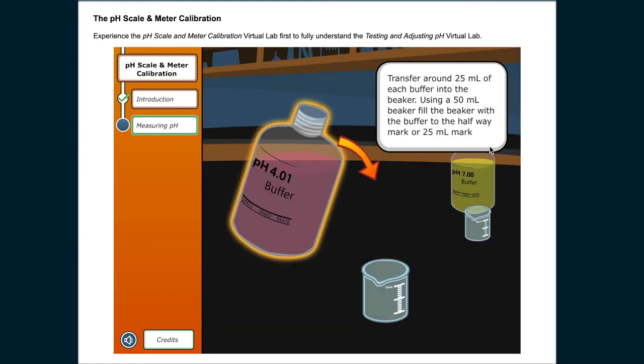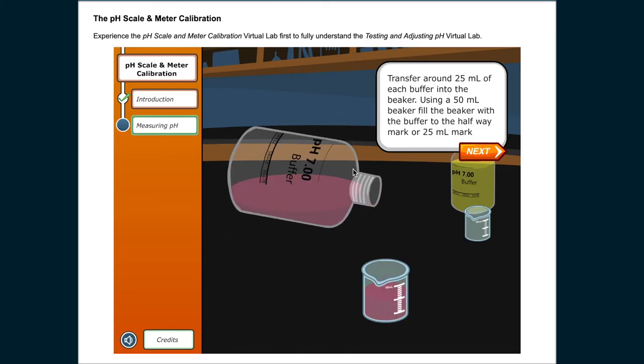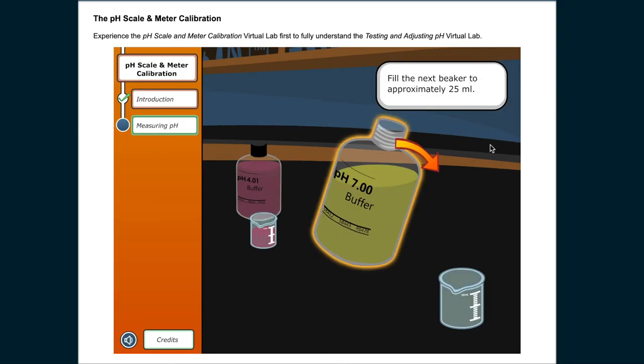Transfer around 25 milliliters of each buffer into the beaker. Using a 50 milliliter beaker, fill the beaker with the buffer to the halfway mark or 25 milliliter mark. Fill the next beaker to approximately 25 milliliters.